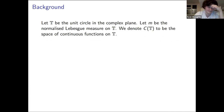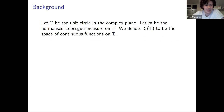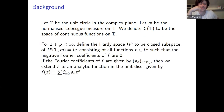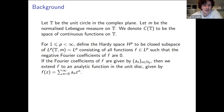Just to keep everyone on the same page, I'll give a brief background in some of the theory and introduce some notation. I'll let T be the unit circle in the complex plane, and let m be the normalised arc measure on T. We'll denote C of T to be the space of continuous functions on T.